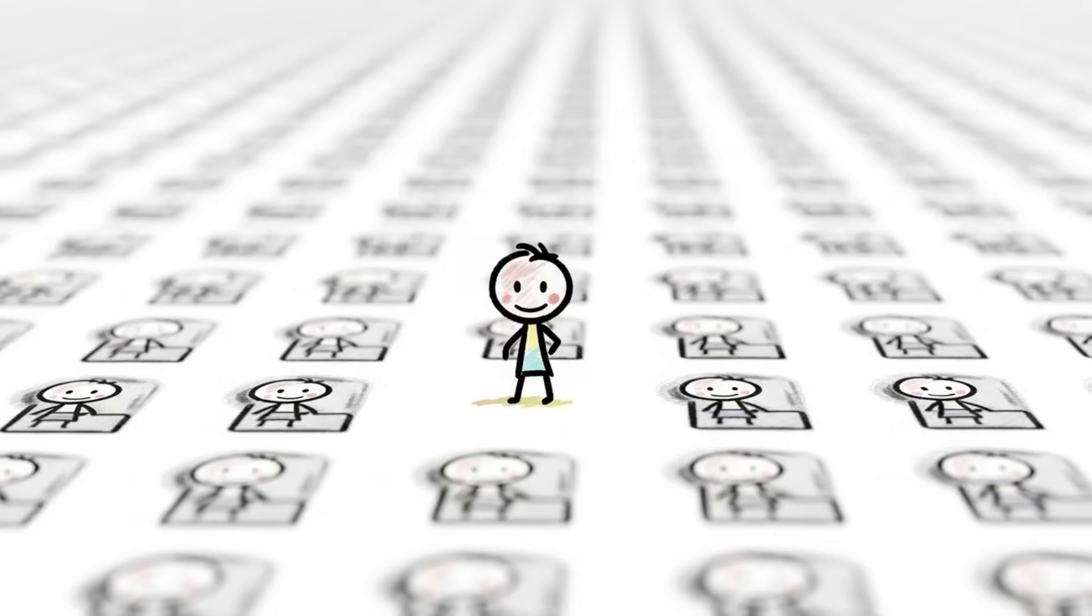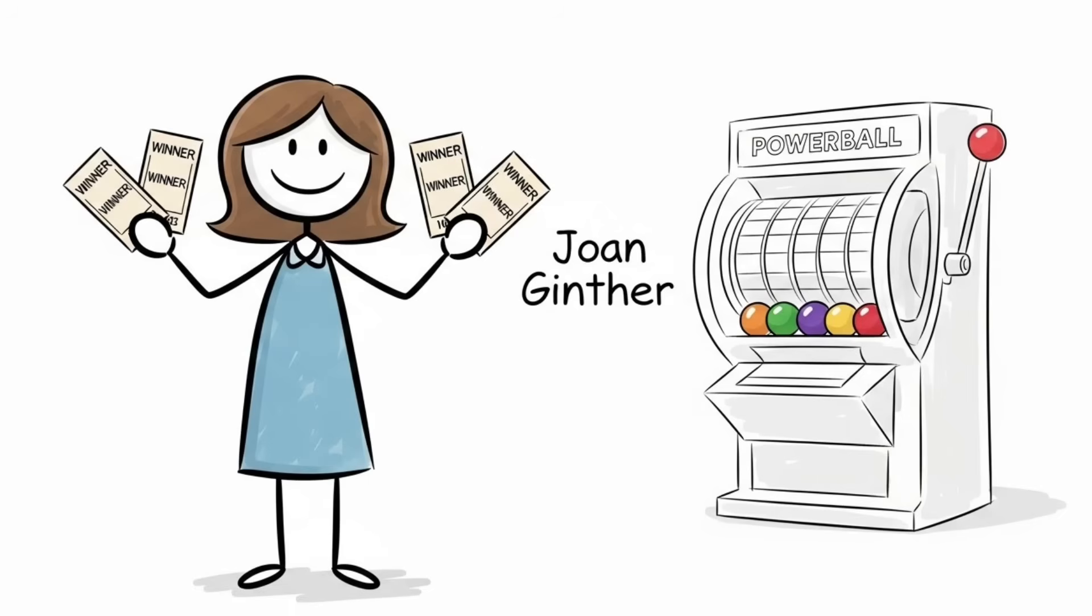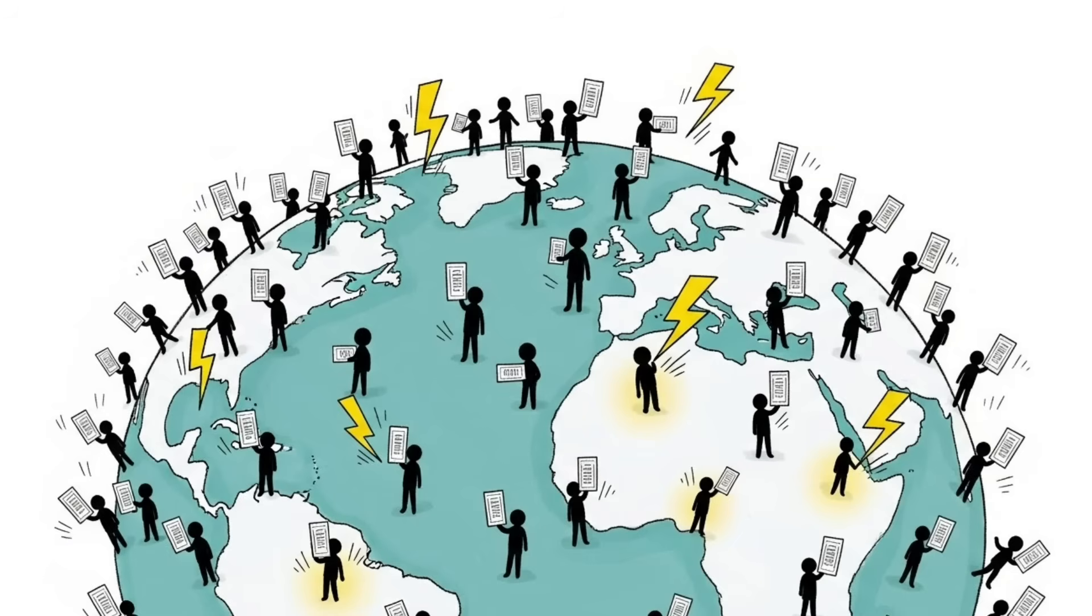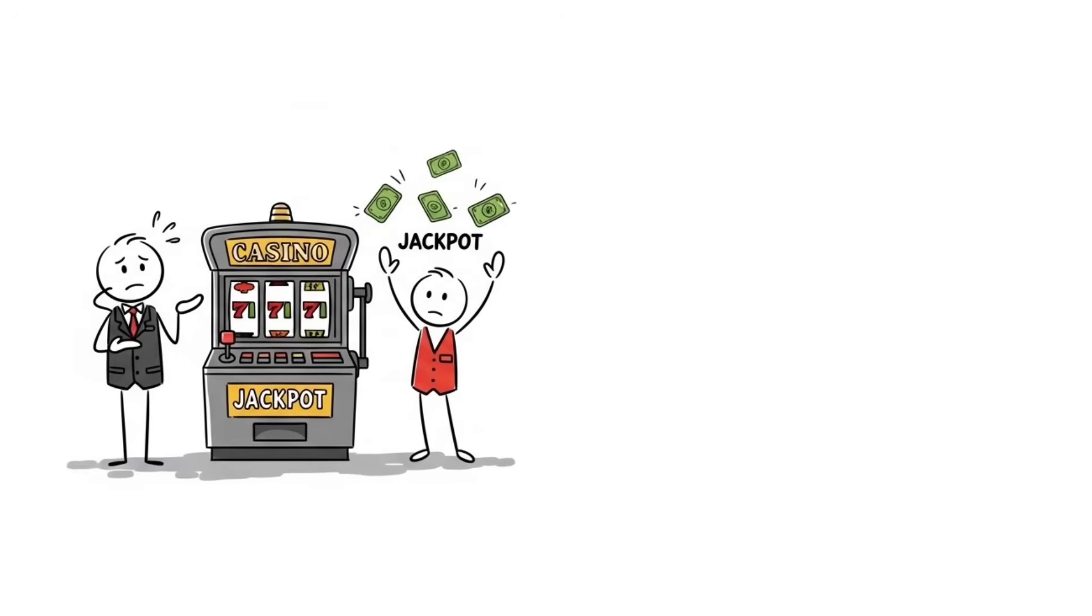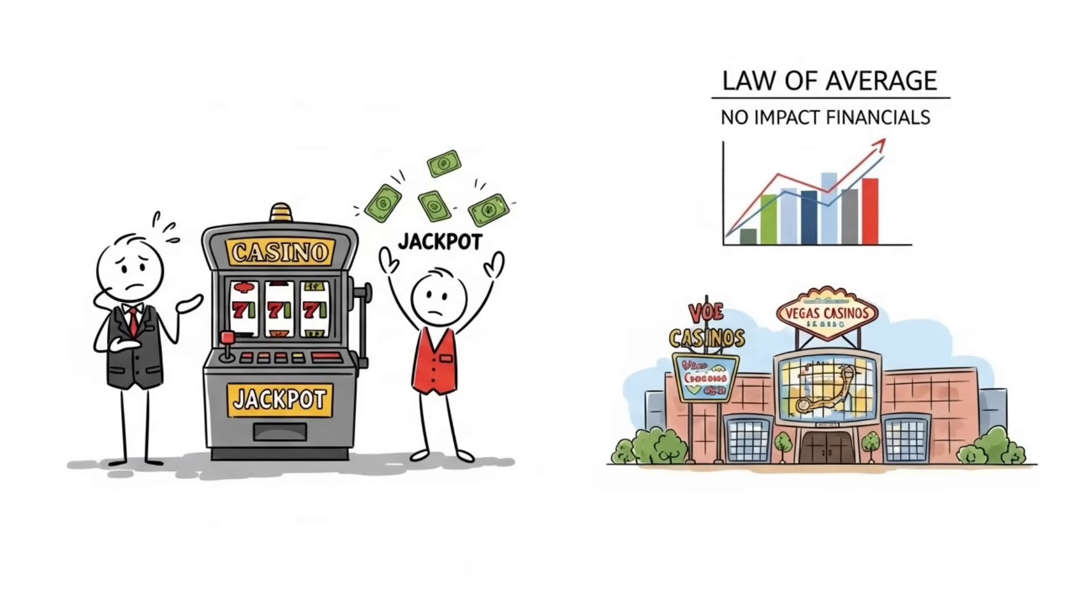This is where the law of truly large numbers says, with enough chances, the absurdly improbable becomes certain. Joan Ginther won the lottery four times. Sounds impossible until you realize millions buy tickets for decades, creating millions of opportunities for lightning to strike repeatedly.